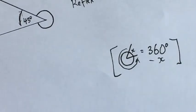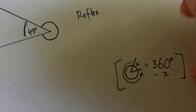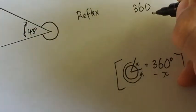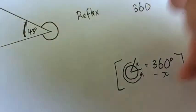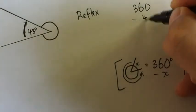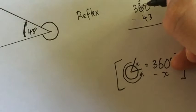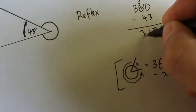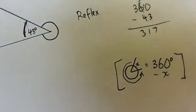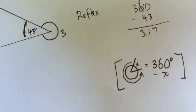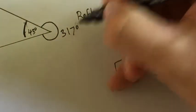Going back to this idea: 360, which is a whole circle, minus this chunk of the whole circle right here, which is 43. Use your calculator if you want. That's 317. So this particular angle is 317 degrees.